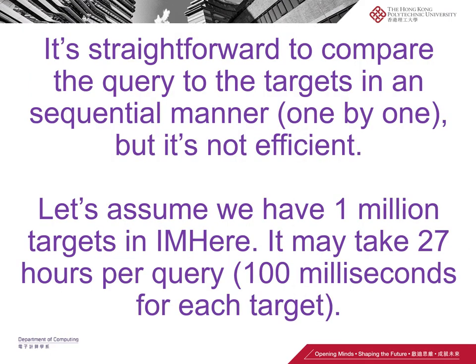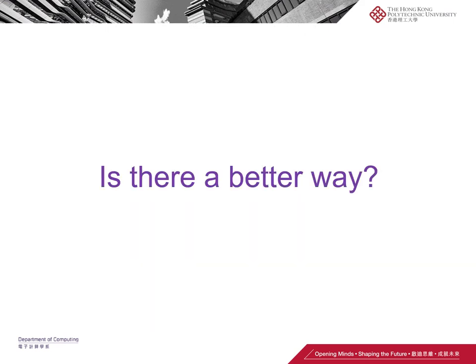It sounds straightforward, but in IMHere we don't have that many images — comparing query to target sequentially is fine. However, in most applications we have a large-scale database. For example, Google is always proud of finishing searches within milliseconds over something like 1 billion items. If we compare similarity one by one for each item, it takes a lot of time. So is there a better way to do it?